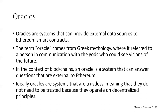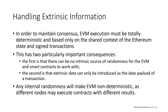A key component of the Ethereum platform is the Ethereum Virtual Machine with its ability to execute programs and update the state of Ethereum, constrained by consensus rules on any node in the decentralized network. In order to maintain consensus, the EVM execution is deterministic and based only on the shared context of the Ethereum state and the signed contracts. This has several important consequences. The first is that there can be no intrinsic source of randomness for the EVM — you can't roll a six-sided die and have two different nodes reach a different result.